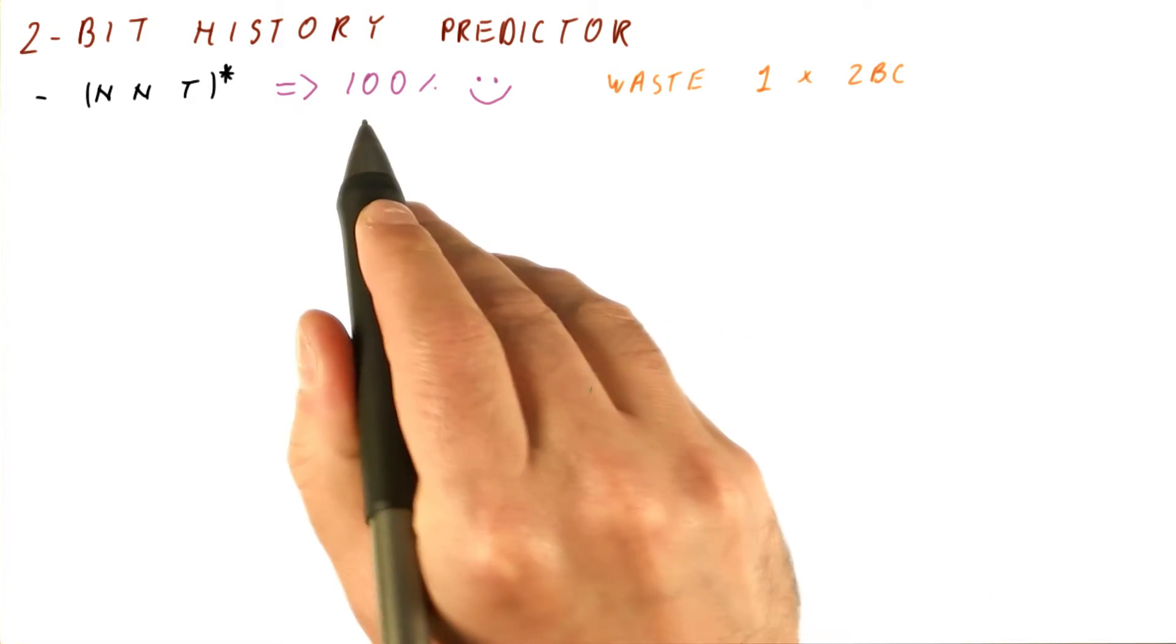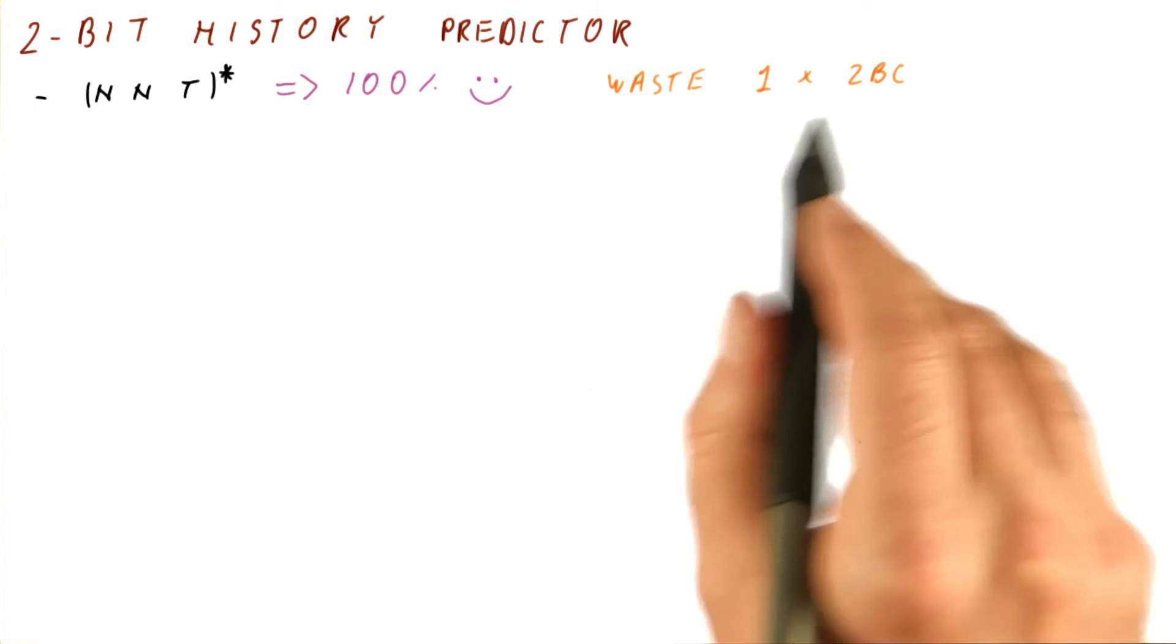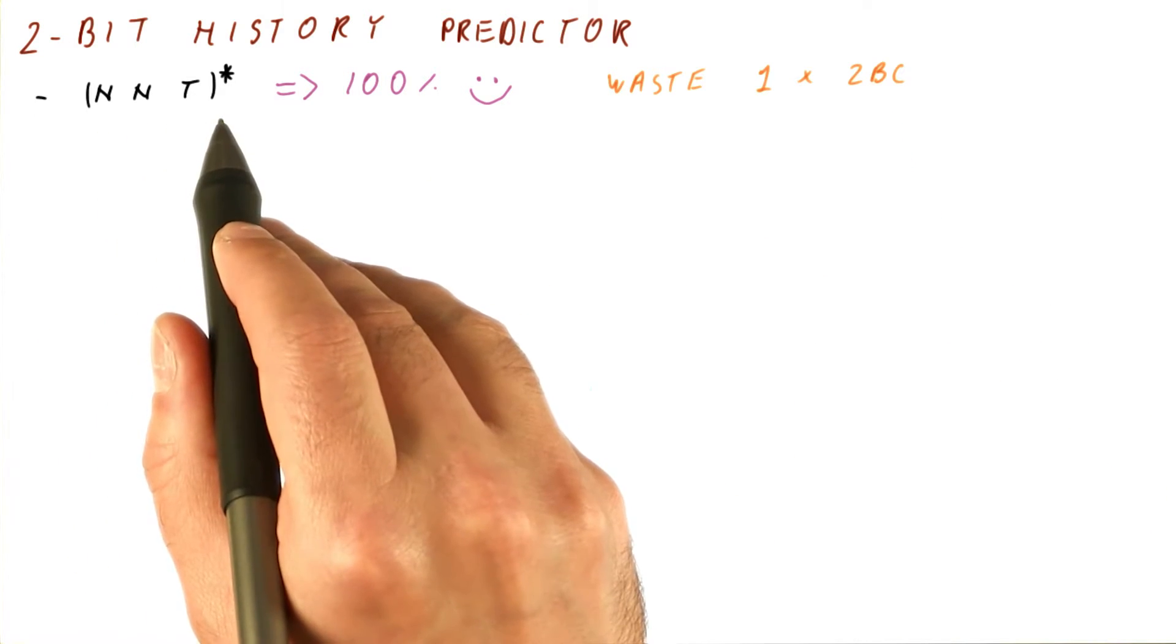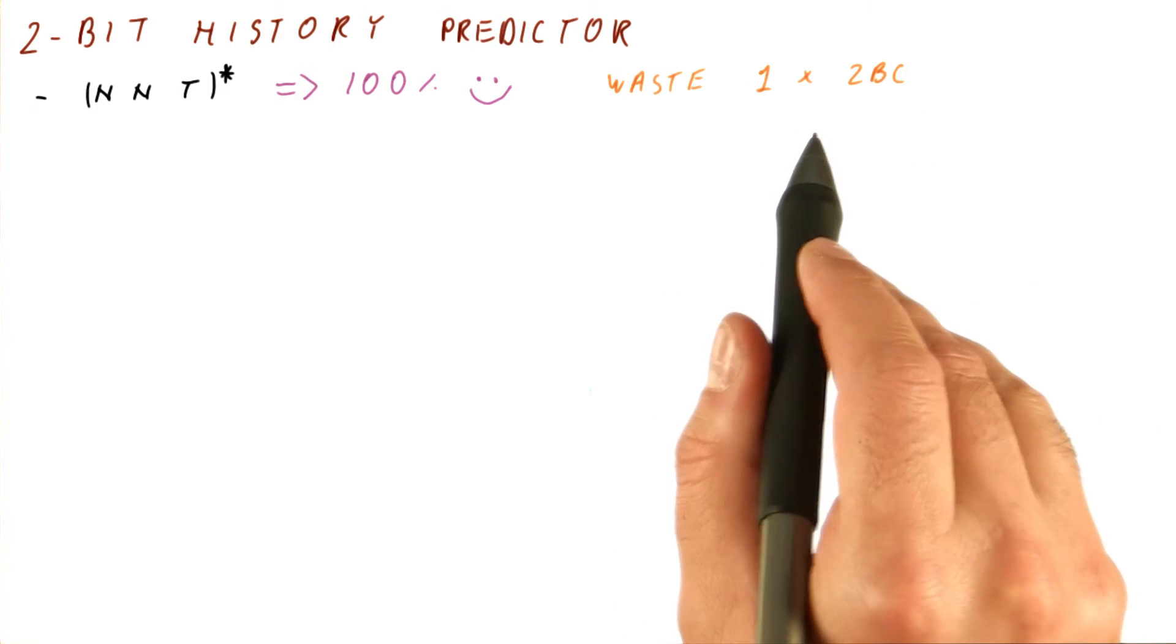We also see that this predictor is really wasting one of its four two-bit counters because it's only using three of the four to predict this pattern. And the fourth one simply never gets used. So we have it in the entry, but we really didn't need it.